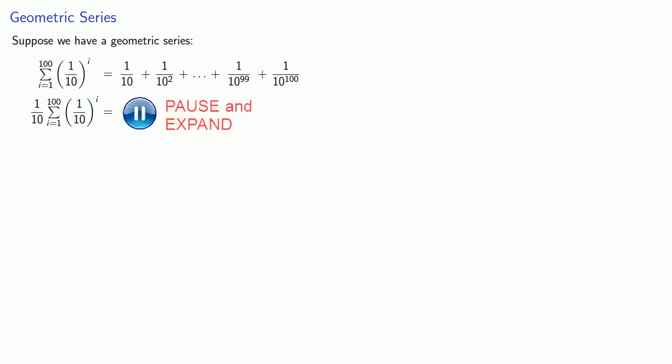How about trying to sum a geometric series? Suppose we have the geometric series to sum from 1 to 100 of 1 tenth to power i. So let's write down the first couple of terms of the series. And the last couple of terms. And here the thing to notice is that if we multiply the entire series by the common ratio 1 tenth, what that does is multiply every term by 1 tenth.